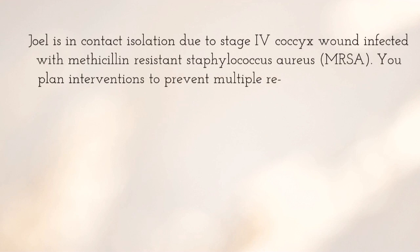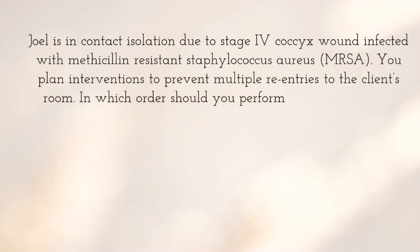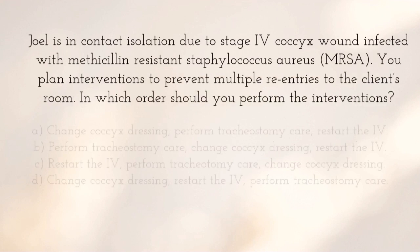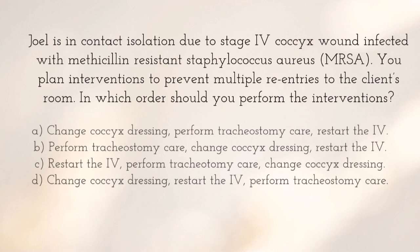Joel is in contact isolation due to a stage 4 coccyx wound infected with methicillin-resistant Staphylococcus aureus, MRSA. You plan interventions to prevent multiple re-entries to the client's room. In which order should you perform the interventions? The correct answer is C: restart the IV, perform tracheotomy care, change coccyx dressing.